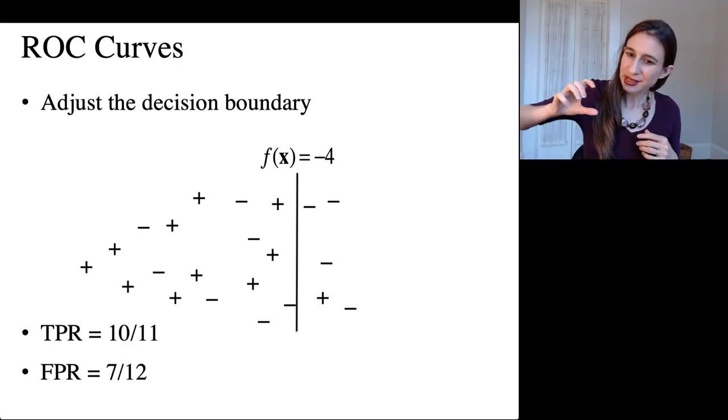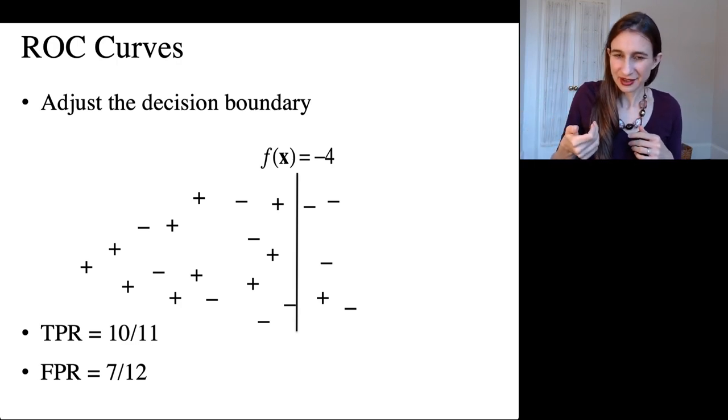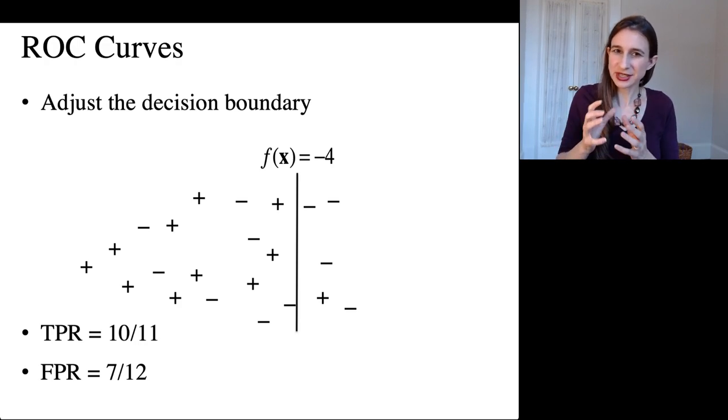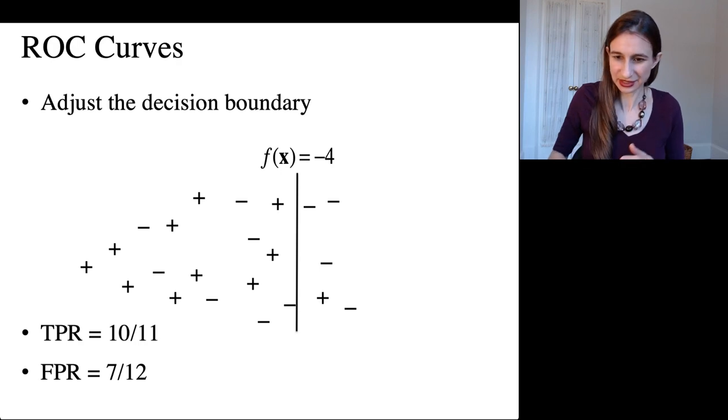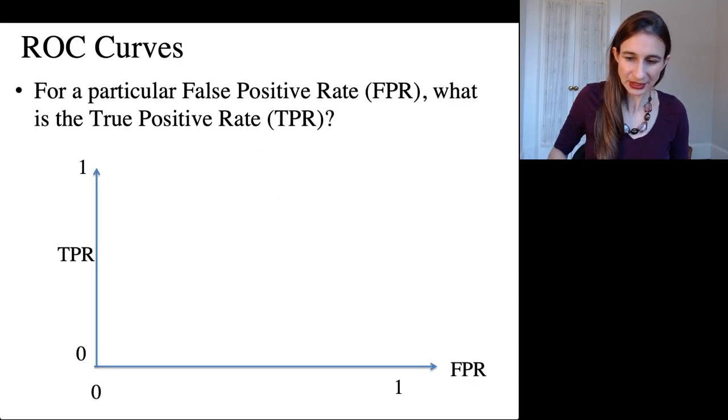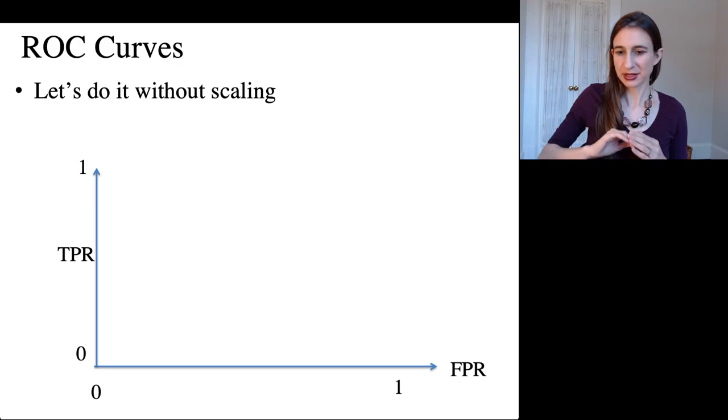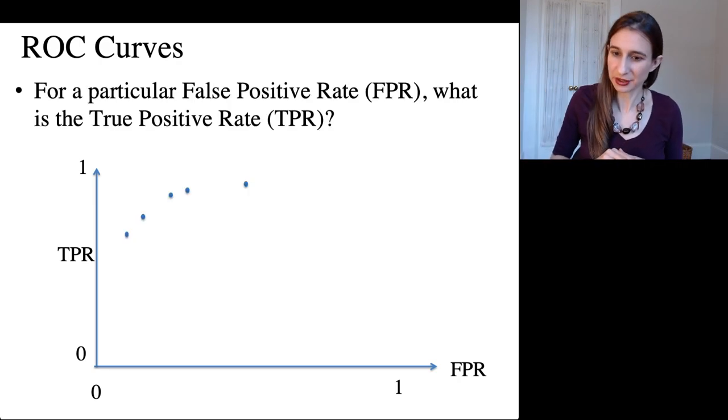That's the same thing as adjusting the dial in terms of how sensitive it is to detecting false positives versus detecting the true positives. And then we would take all those true positive rates and false positive rates and place them on a plot and then connect them all up and produce an ROC curve.